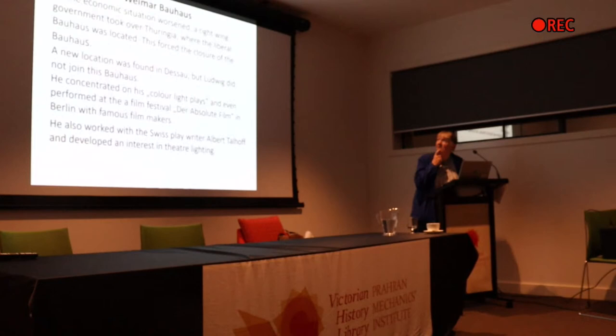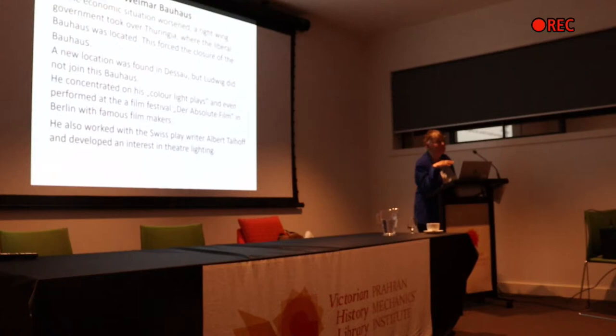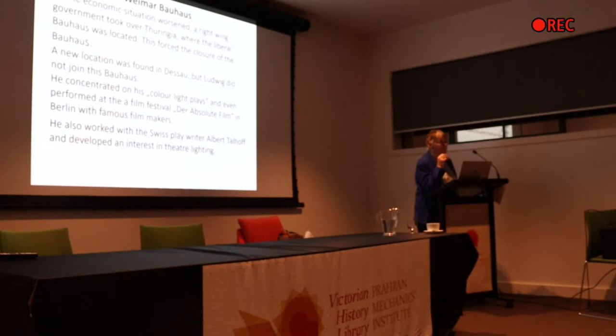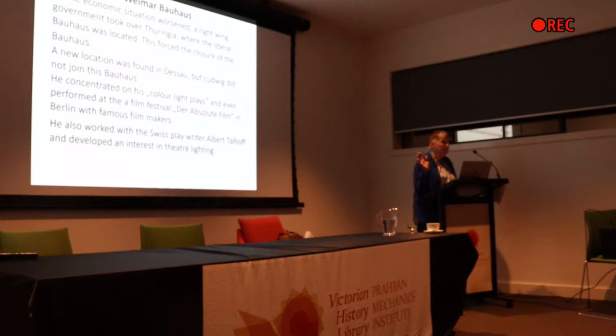The Bauhaus was a very liberal institution, and so they found a new location in another state of Germany, in Dessau. They found a man who was quite willing. But Ludwig decided to concentrate on colour light plays, and he even performed with some famous filmmakers of the time in 1923. He was the only one who didn't have a film — he had his colour light plays. He also worked with Albert Talhoff, who was interested in theatre lighting, and put on a huge play, asking Ludwig to help with the lighting.